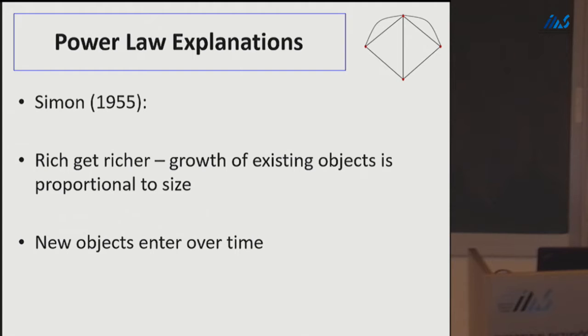Simon's 1955 paper probably first nailed the power law explanation. He identified two ingredients needed to get power laws. First, existing objects must grow over time in proportion to their existing size—'rich get richer.' That alone might give a log-normal distribution, so it's not enough. Second, you need new objects being introduced over time. With time-stamped objects growing proportionally and new ones entering, you get extreme distributions resembling power laws.